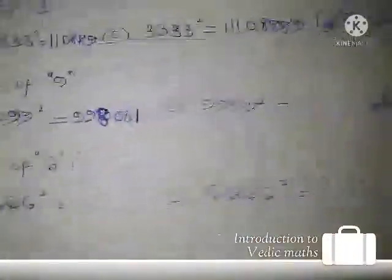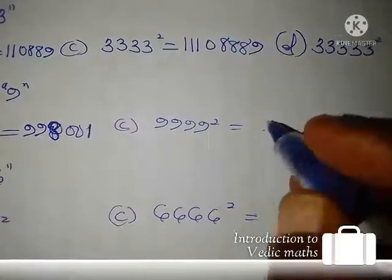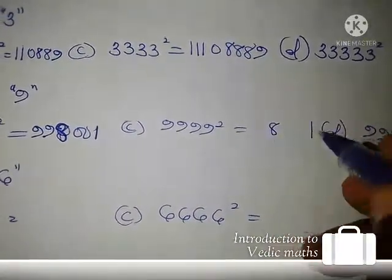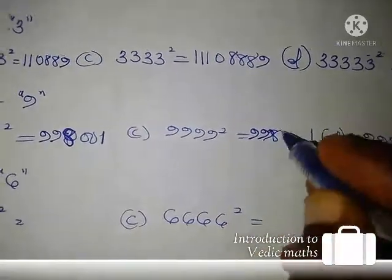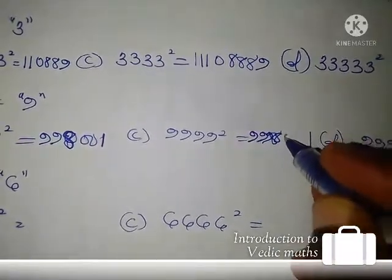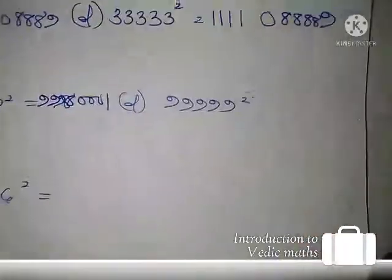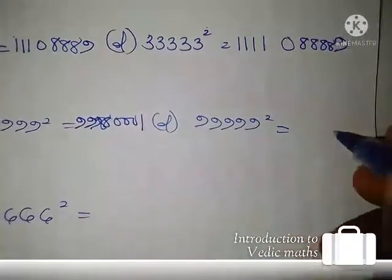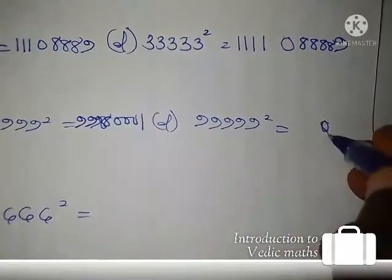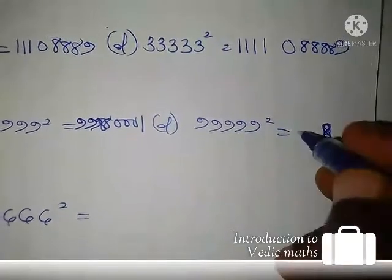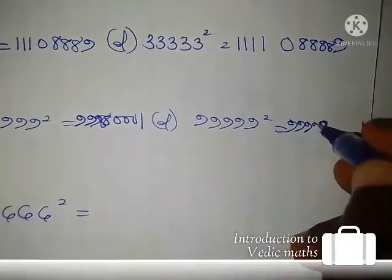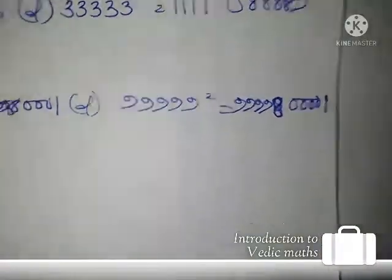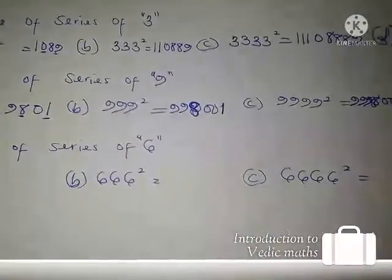For 9999 squared — four digits — 8 and 1 are constant, and we introduce three nines and three zeros: 99980001. For 99999 squared — five digits — 8 and 1 are constant, then we introduce four nines and four zeros: 9999800001.